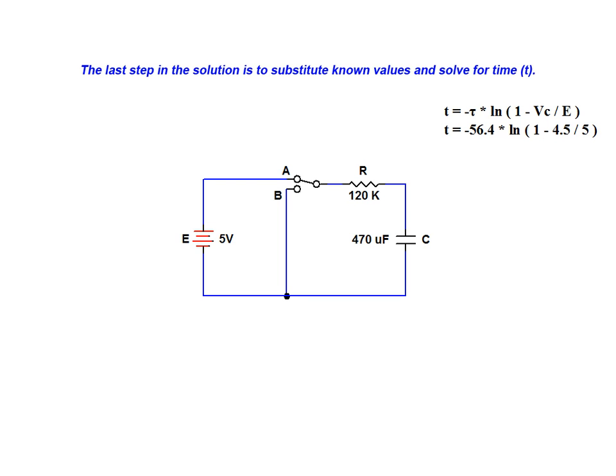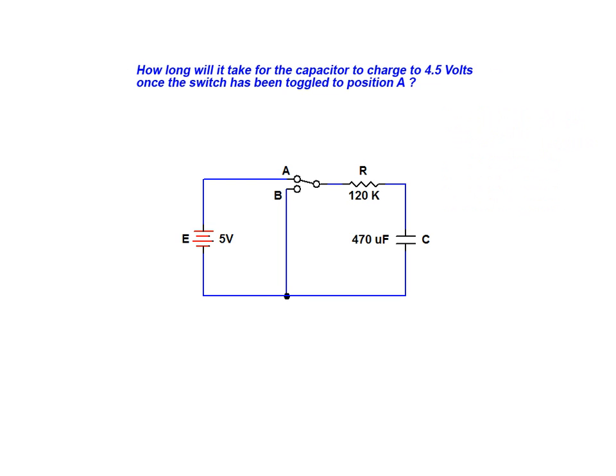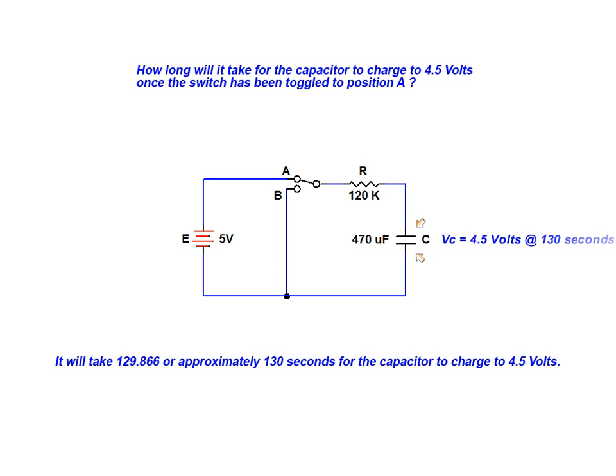When working with the ln function, it is preferable to do the calculations inside the brackets first, and then press the ln button on the calculator. The voltage across the plates of the capacitor will reach a value of 4.5 volts in approximately 130 seconds.